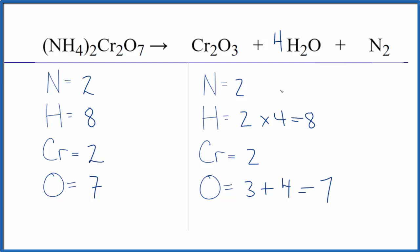This is Dr. B with the balanced equation for the decomposition of (NH₄)₂Cr₂O₇. This is ammonium dichromate. Thanks for watching.